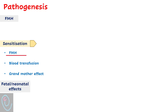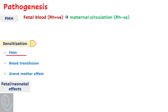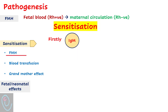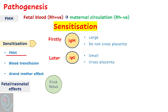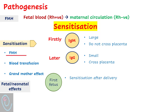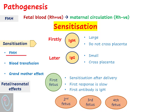In RH negative mothers, the passage of RH positive blood will stimulate an immune response — a process known as sensitization. It firstly produces IgM antibodies, which are large and do not cross the placenta; subsequently it produces the smaller IgG antibodies, which do cross the placenta. The first fetus is usually not affected because sensitization typically occurs after delivery. The first antibody response develops slowly and is usually not detected serologically until about 15 weeks after exposure. The second and subsequent pregnancies are affected.